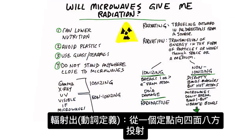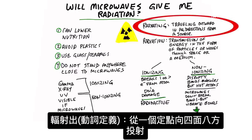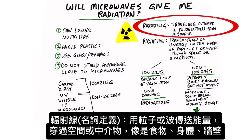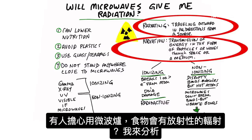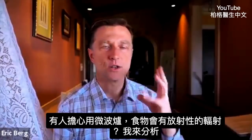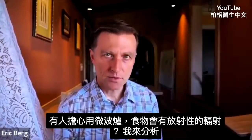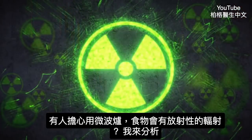The definition of radiating means traveling outward in all directions from a source. Then we have radiation, which is the transmission of energy in the form of particles or waves through space or a medium like food, a body, or even a wall. Some people have the concern that if they microwave their food, it's going to be radioactive in some way.